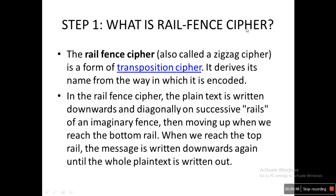Step 1: What is Rail Fence Cipher? According to Wikipedia, the Rail Fence Cipher, also called zigzag cipher, is a form of transposition cipher. Transposition cipher means we do not replace any text with some other text — instead we just jumble up the order of the letters in the text. Rail Fence Cipher derives its name from the way in which it is encoded. The plaintext is written downwards and diagonally on successive rails of an imaginary fence, then moves up when we reach the bottom rail. When we reach the top rail, the message is written downward again until the whole plaintext is written out — a zigzag order from top to bottom and back again.